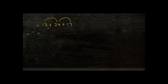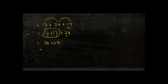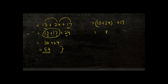Instead of adding 13 plus 24 first, I can rearrange to 13 plus 17 plus 24. I chose this because 3 plus 7 gives me 10, making it easier to add those two first. So 13 plus 17 equals 30, and 30 plus 24 equals 54. This is easier than doing 13 plus 24 first and then adding 17, though both approaches give the same answer of 54.